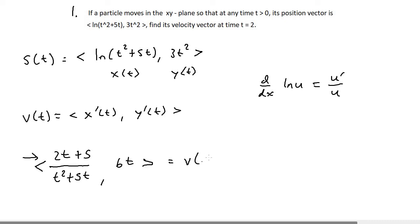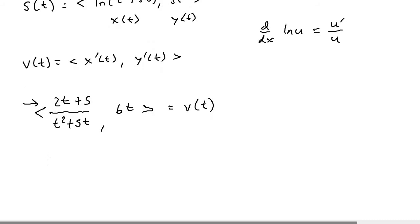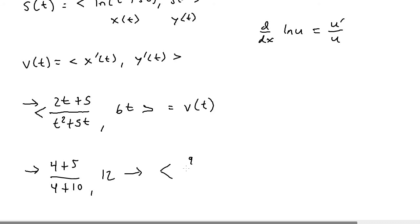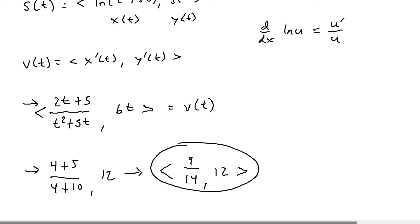For the y component, the derivative of 3t squared is 6t. So the velocity vector is (2t+5)/(t²+5t), 6t. Now it's asking for t equals 2, so we plug in 2: for the x coordinate, 2 times 2 is 4 plus 5, over 2 squared which is 4 plus 5 times 2 which is 10. For the y coordinate, 6 times 2 is 12. So the final velocity vector at t equals 2 is 9/14, 12.